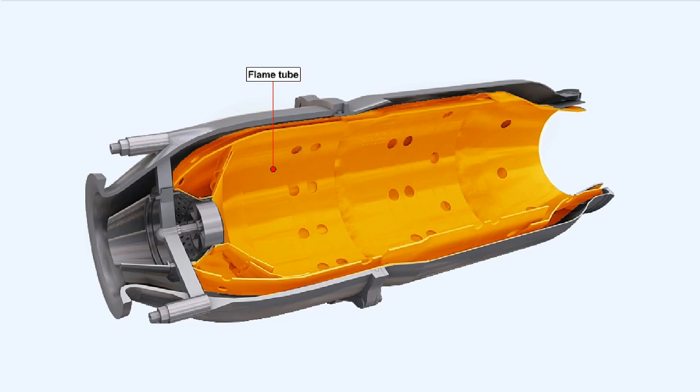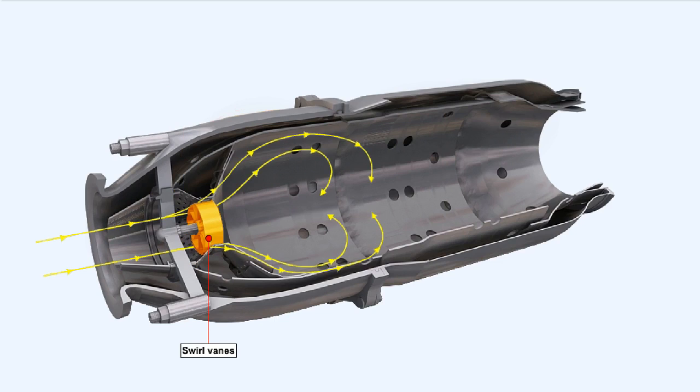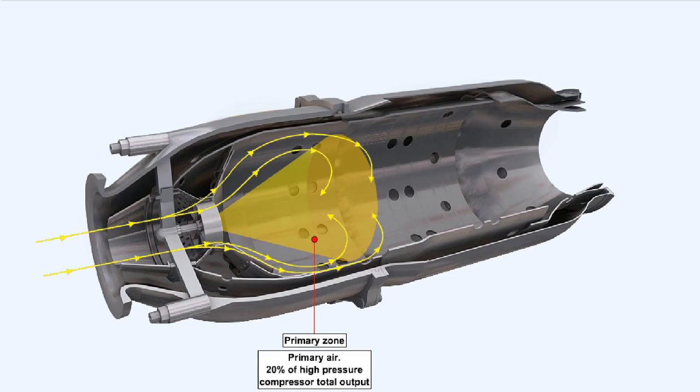This diagram shows how the air entering the flame tube passes through the snout, before being divided to go through the perforated flare and the swirl vanes and into the primary zone. The primary zone is a region of lower velocity recirculation, positioned immediately downstream of the fuel spray nozzle. It's within this zone that stable combustion is achieved. The primary air is approximately 20% of the total air flow coming from the high pressure compressor and into the combustion chamber. This is the air which is mixed, in a ratio of approximately 15 to 1 by weight, with the fuel and burnt.